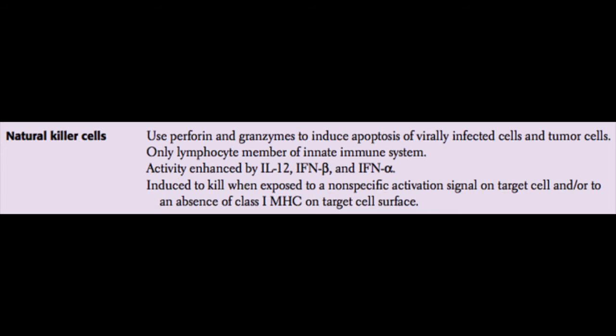NK cell activity is enhanced by cytokines like IL-12, interferon beta, and interferon alpha. Natural killer cells are looking for two different types of signaling: one that can activate killing, or the absence of one that inhibits killing — and that inhibitory signal is mediated through MHC class 1 on the target cell surface.